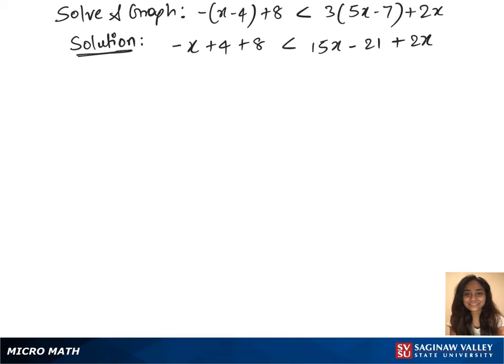Now combine the like terms. So that's minus x plus 12 on the left, less than 17x minus 21 on the right.